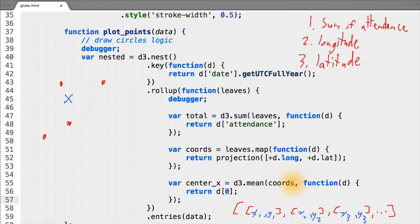And remember, the coordinates array represents the x and y coordinates returned from the projection function, which gets stored in an array where the first element represents the x value and the second element represents the y value. So our coordinates array is simply a bunch of x, y pairs, representing the pixel values where each game occurred.